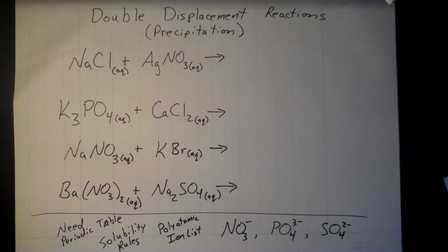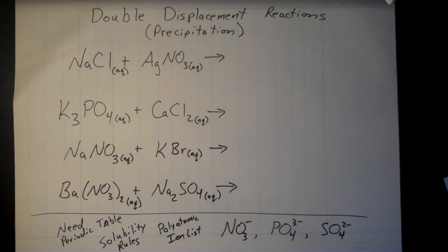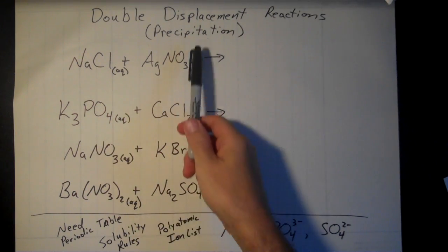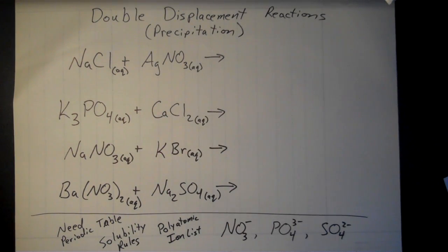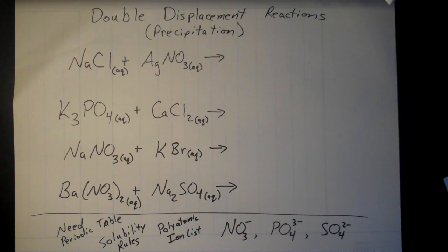In this video we're going to be learning about double displacement reactions. There are two main kinds we're going to look at: precipitation reactions and acid-base reactions, but this video will focus just on precipitation reactions. These are reactions that produce a solid, or a precipitate.